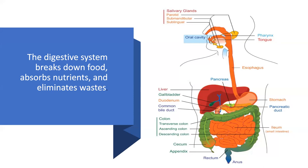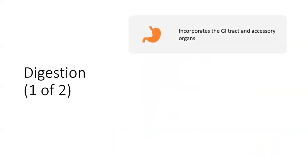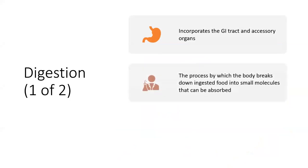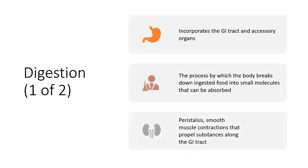The digestive system breaks down food, absorbs the nutrients, and eliminates the waste. Starting from the mouth, the oral cavity, going all the way down towards the anus is our complete digestive system. Digestion incorporates the GI tract and accessory organs — the process by which the body breaks down ingested food into small molecules that can be absorbed. Peristalsis is the movement, smooth muscle contractions that propel substances along the GI tract.